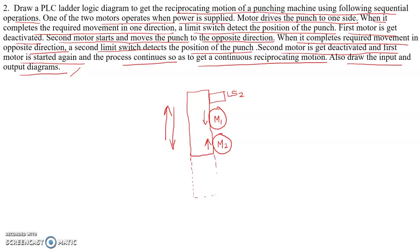The dotted line represents the downward position — the downward movement of the punch goes down to that point, where there is a limit switch LS1 for sensing the downward position of the punch. So we have two motors M1 and M2, and two limit switches LS1 and LS2. That is the setup.